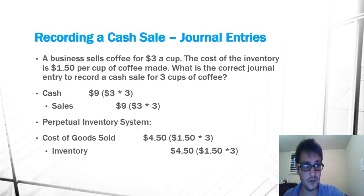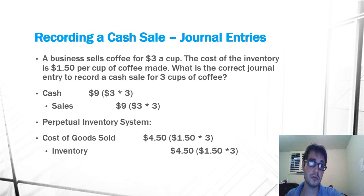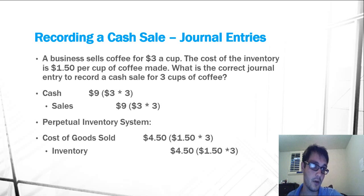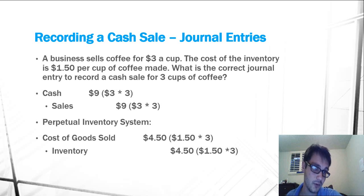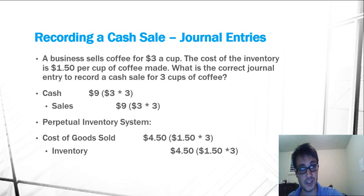So let's look at the two journal entries. We increase cash through a debit for $9 because we received it, and we're also increasing our sales through a credit of $9. So that makes sense.